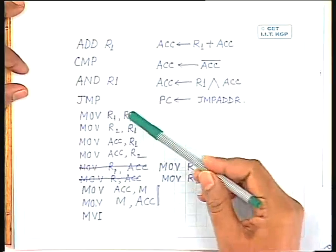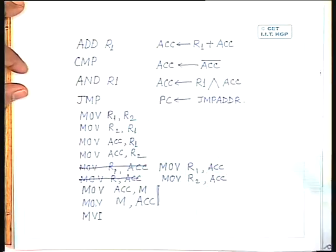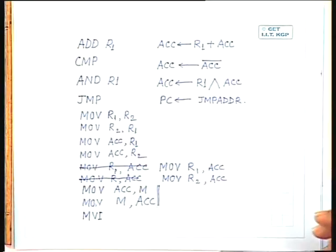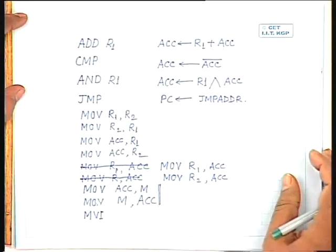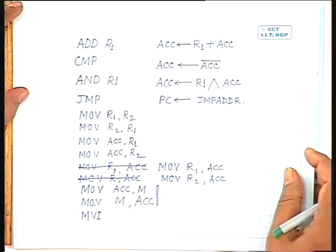The instruction set includes an ADD instruction (ADD R1), a complement, an AND logical instruction (AND R1), one jump instruction, and a few move instructions. We have also seen that the block diagram of the timing and control unit of this CPU will have the instruction opcode going from the instruction register to the instruction decoder.